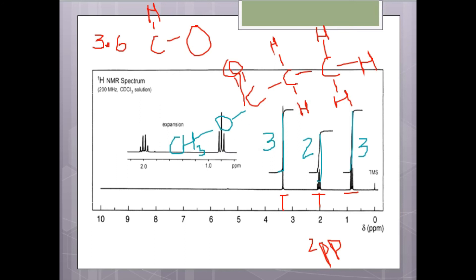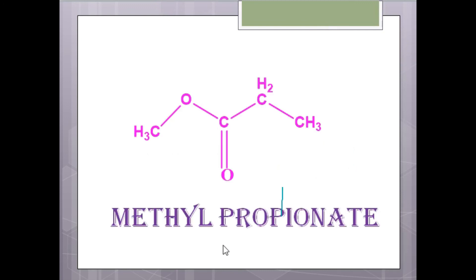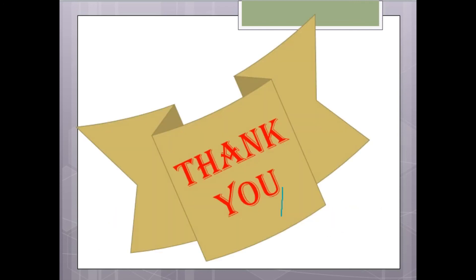This gives us the complete information about our structure, which is methyl propionate: CH3O–C(=O)–CH2–CH3. This is our methyl propionate. Thank you so much for viewing this — I hope you guys liked it.